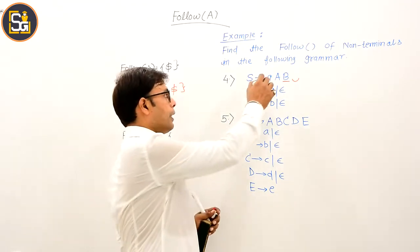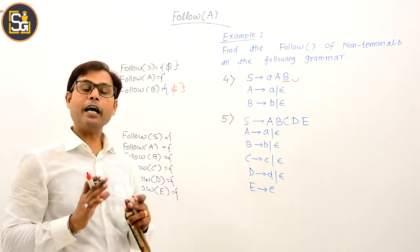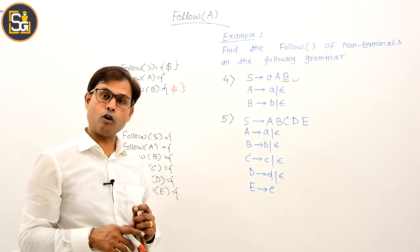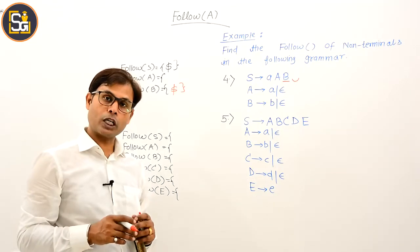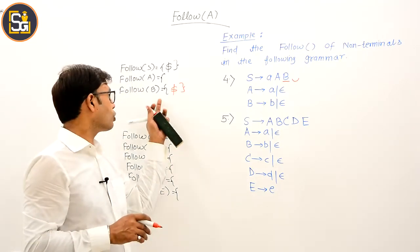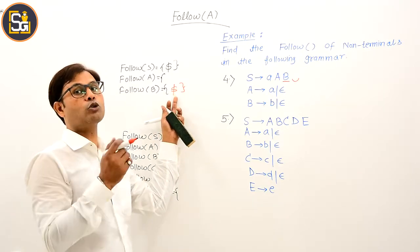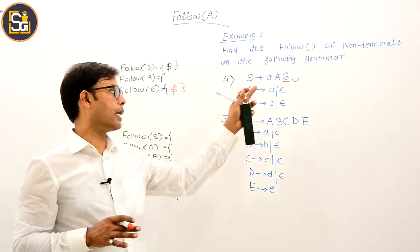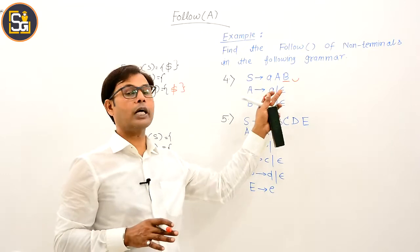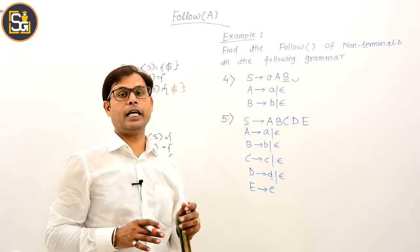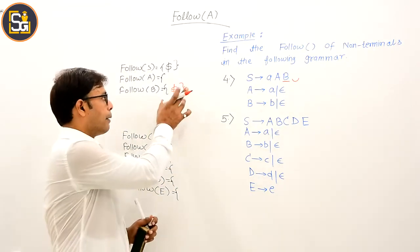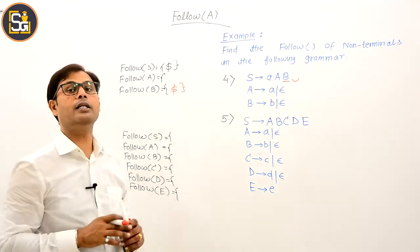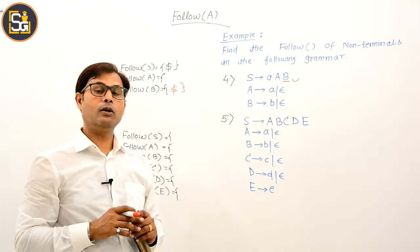Is capital B present anywhere else? If it were, we would compute FOLLOW of B from there as well and union it with this answer. But since capital B is not present anywhere else, this is the complete FOLLOW set for capital B.